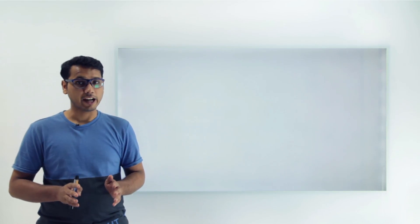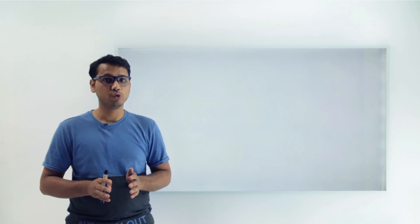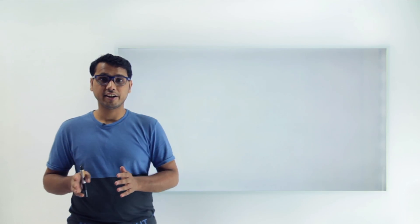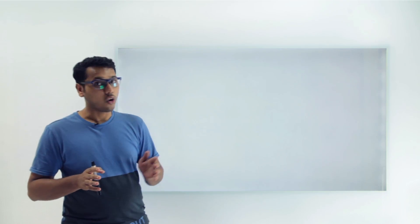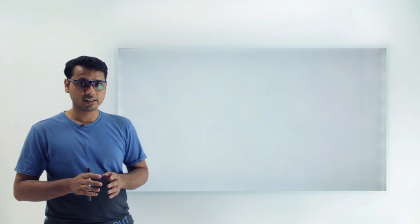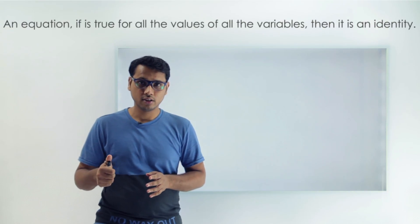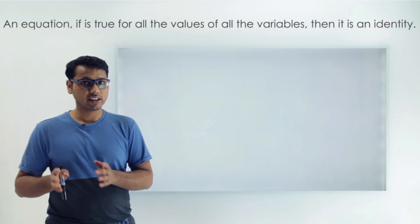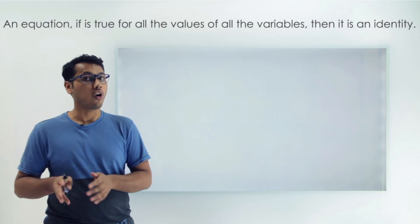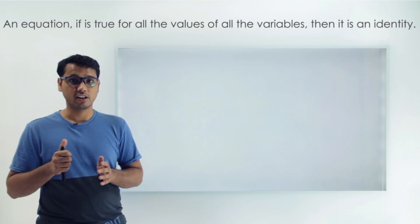You might have seen different types of identities being used in trigonometry and wondered where these identities come from. We'll try to understand all these identities that are extensively used in trigonometry. Before understanding those identities, we should understand what an identity means. The definition of identity says that an equation is an identity if it is true for all the values of all the variables involved.